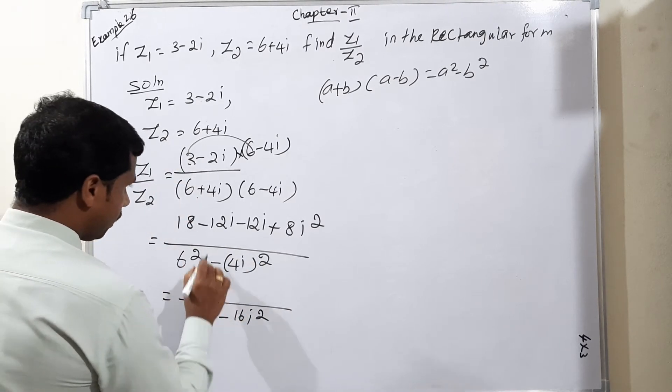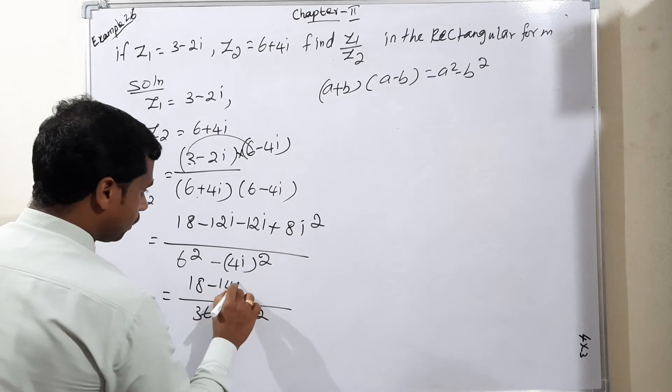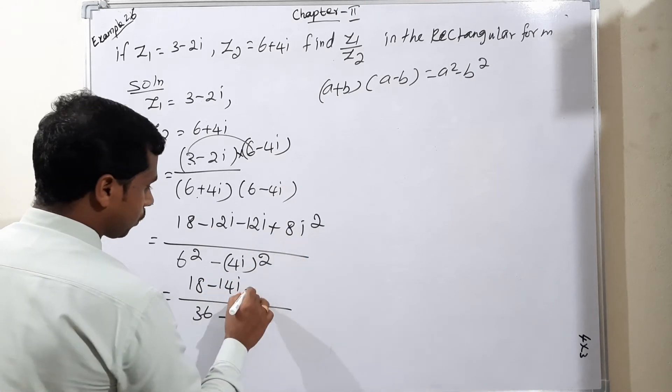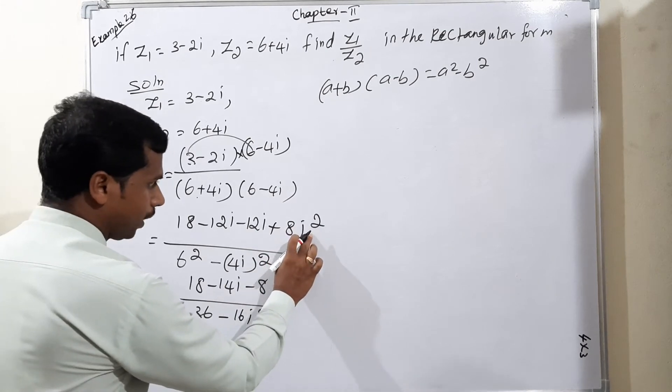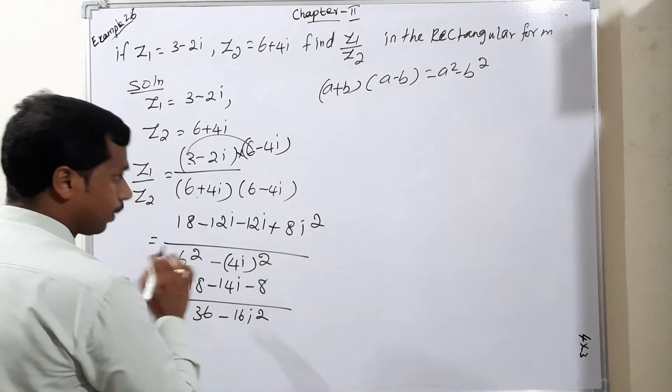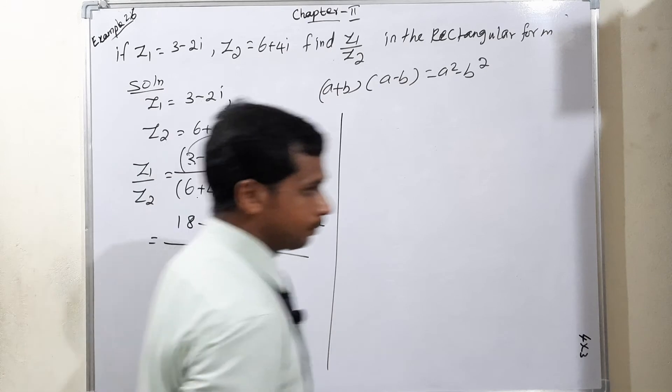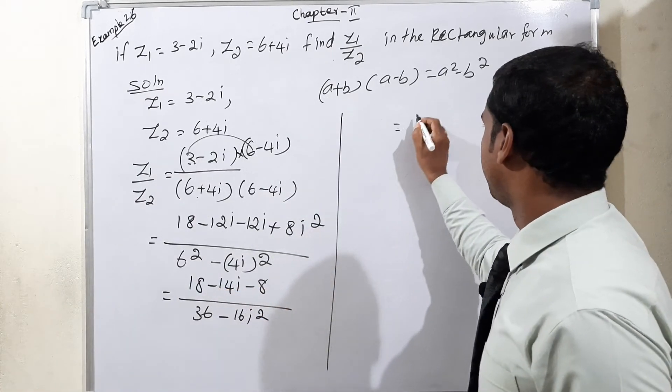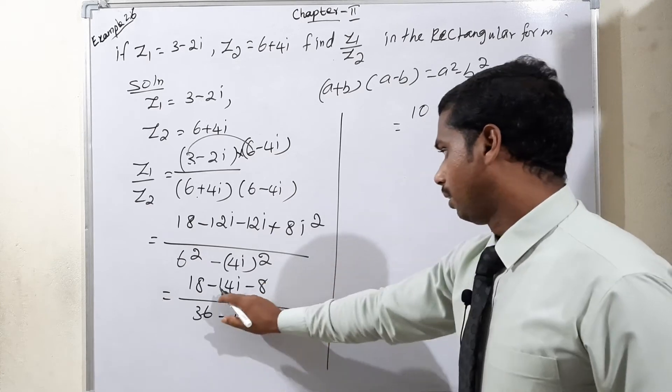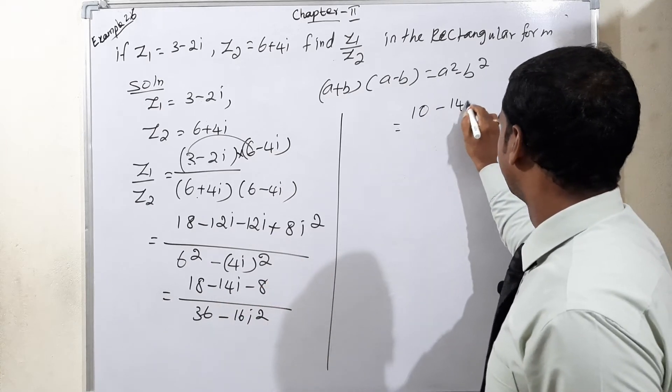Now numerator. So 18 minus 12i minus 12i means minus 14i. 8i square means definitely we can write it minus 8 because i square minus 1 means plus 8 into minus 1 means minus 8. So next condition, 18 minus 8, 10 minus 14i.